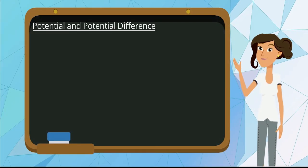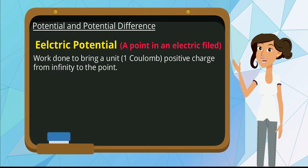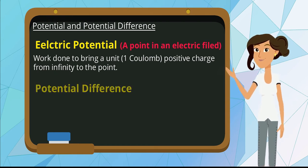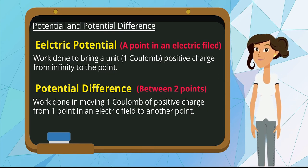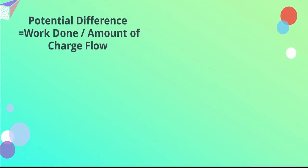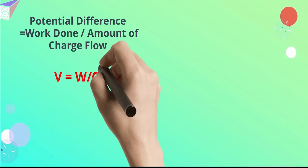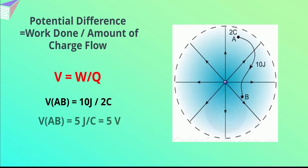The electric potential at a point in an electric field is the work done to bring the unit positive charge from infinity to the point. The potential difference between two points is defined as the work done in moving one coulomb of positive charge from one point in an electric field to another point. Potential difference is equal to the work done over the amount of charge flow. From the diagram, the work done to move a charge of 2C from point A to point B is 10 joules, so the potential difference between A and B is equal to 5 volts.